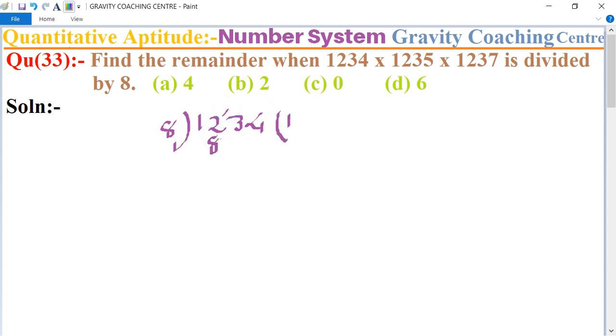0, 8 goes into it 0 times, so equal to 4. Now we take 3, so 8 into 5 is 40, so 3.